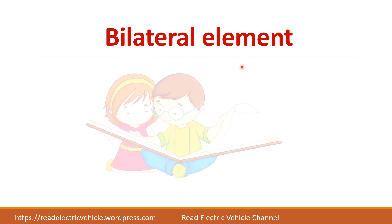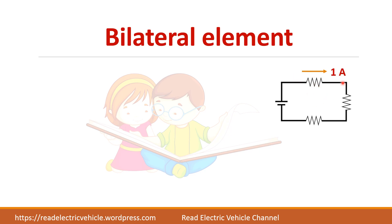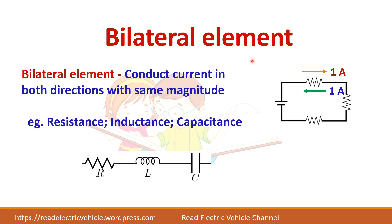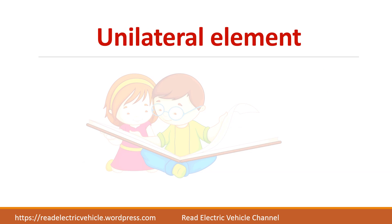The next category is bilateral and unilateral elements. 'Bi' means two directions. If you take a resistor, current can pass in one direction and also in the opposite direction, and the magnitude of current does not change when the direction changes. So a resistor is called a bilateral element — an element which conducts current in both directions with the same magnitude. Resistance, inductance, and capacitance all come under bilateral elements.